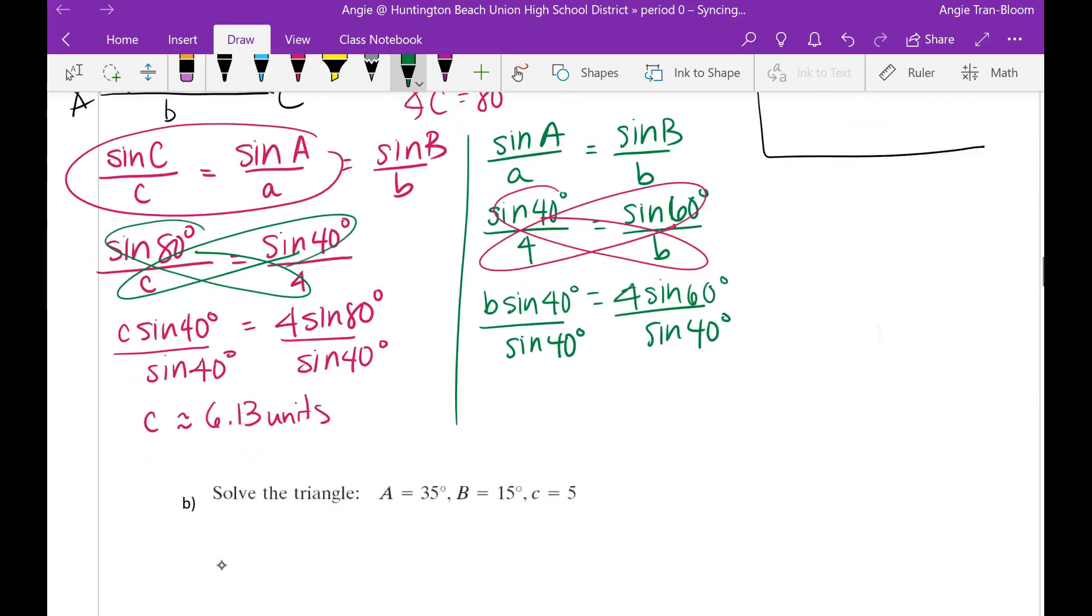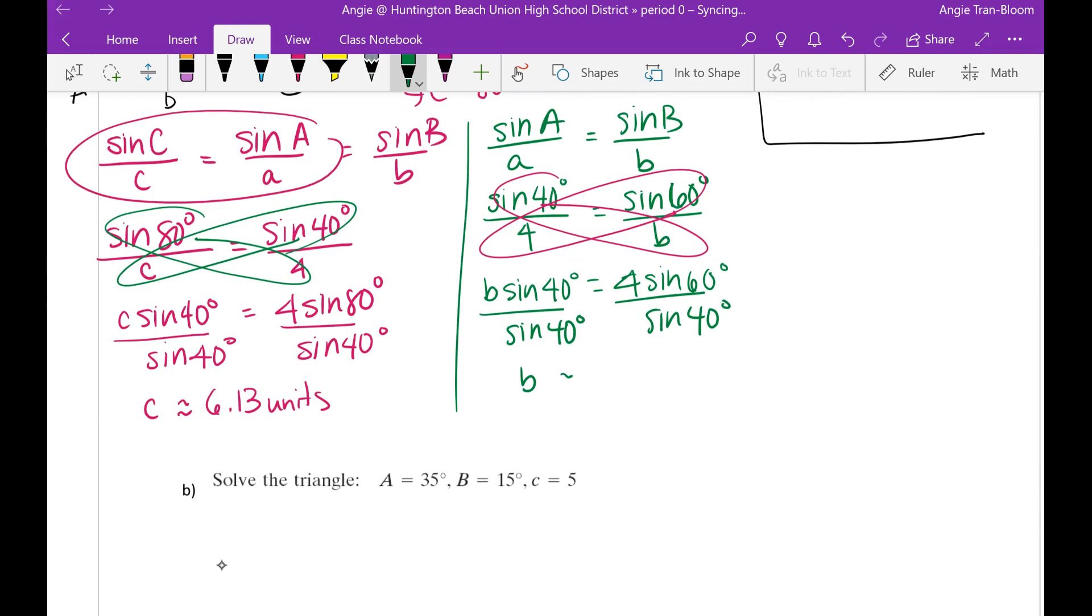When you cross-multiply, this is B times sine of 40 degrees equals 4 times sine of 60 degrees. Divide both sides by sine of 40 degrees. Technically, you already know what sine of 60 is, but since I'm going to use a calculator for sine of 40 anyway, so I might as well just punch it in.